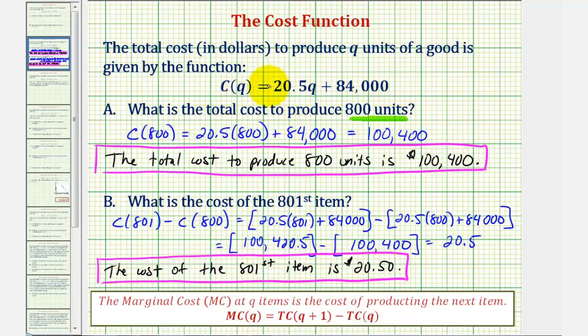If we look at our cost function for a moment, notice the derivative of the cost function, or C prime of Q, would be equal to the derivative of 20.5Q, which is just 20.5, plus the derivative of 84,000, which would be zero.